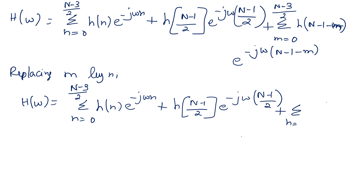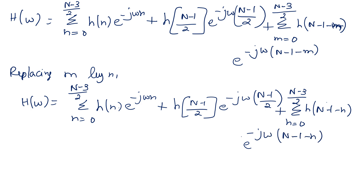So H(ω) equals summation n equal to 0 to (N-3)/2 of h(n) e^(-jωn), plus h((N-1)/2) e^(-jω(N-1)/2), plus summation n equal to 0 to (N-3)/2 of h(N-1-n) into e^(-jω(N-1-n)). For a symmetrical impulse response, h(N-1-n) is set to be equivalent to h(n). Therefore I am rewriting this particular expression.